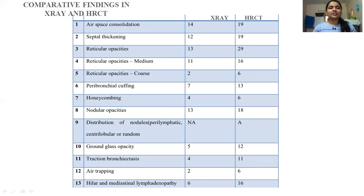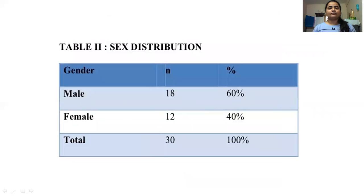This chart shows comparative findings in X-ray and HRCT. For example, only 2 patients were identified on X-ray with reticular opacities, while 6 patients were identified on HRCT. Only 5 patients with ground glass opacities were identified on X-ray, while 12 patients were identified on HRCT.